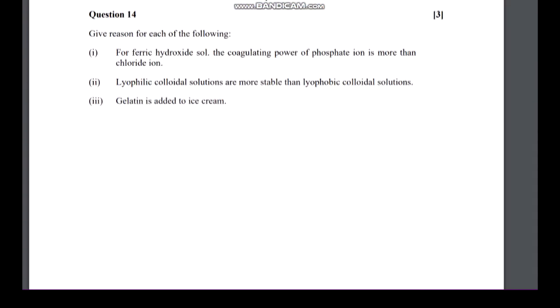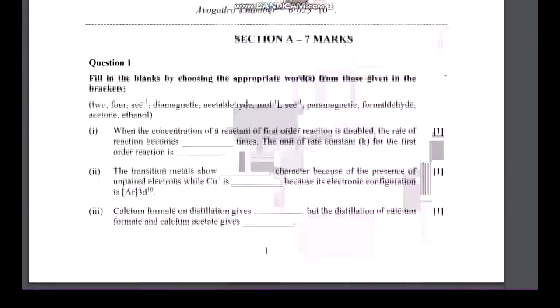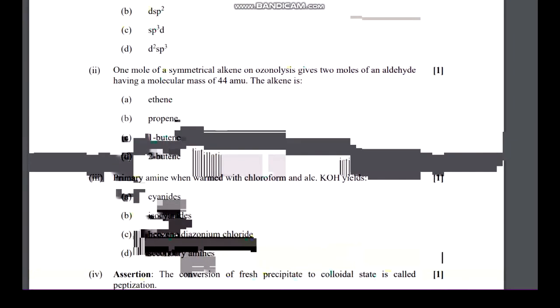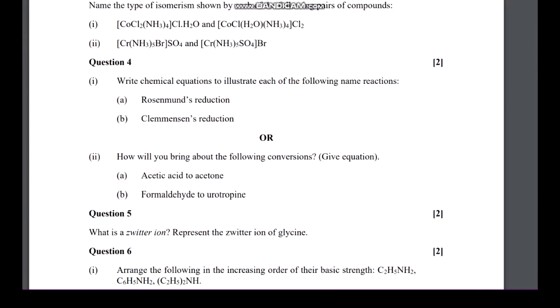Then we have d-f block again - write the formula potassium trioxalatoaluminate, this is from nomenclature of coordination compound. And reason from adsorption. As you can see, if we analyze the specimen copy, chemical kinetics is very important, and then aldehydes, alcohols, aldehydes, acids - that chapter is important, as well as nitrogen compounds and other chapters.